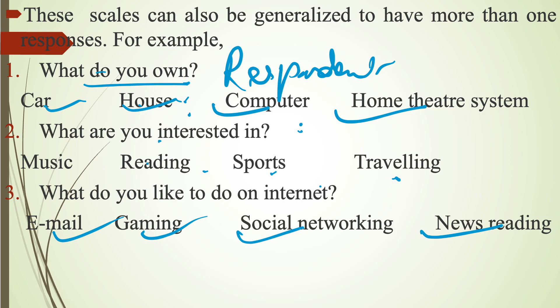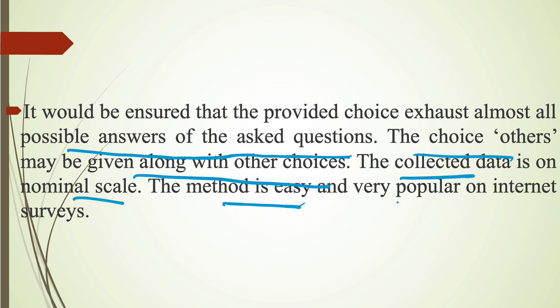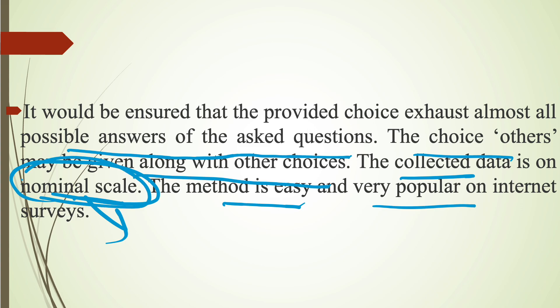When we can select more than two options as a response, this comes under multiple category scale. Whereas in the case of single category scale, the respondent has to select only one response from the given questions. It should be ensured that the provided choices exhaust almost all possible answers. The choice 'others' may be given along with other choices. The collected data is on a nominal scale, and the method is easy and very popular in internet surveys.